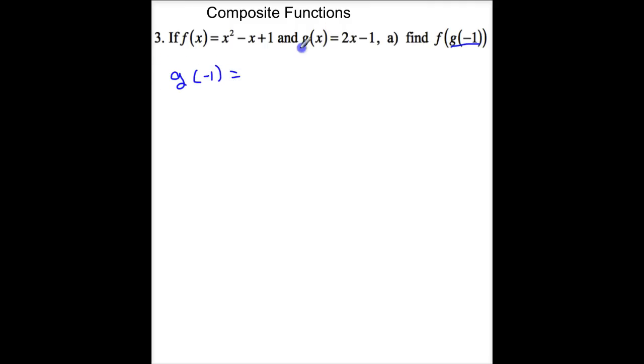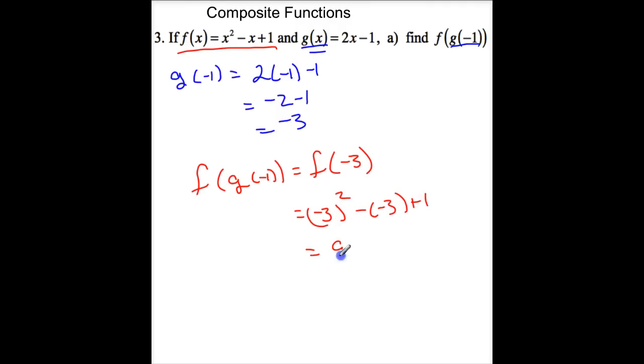Well, I'm coming up to my g function. This is 2 times negative 1 minus 1. So this is negative 2 minus 1 or negative 3. Now, I'm going to take this. And let me switch colors for you. f evaluated at g of negative 1 is f evaluated at negative 3. So everywhere in f that I have x, I'm going to plug in negative 3. So this is negative 3 squared minus negative 3 plus 1. So this is 9 plus 3 plus 1 or 13.